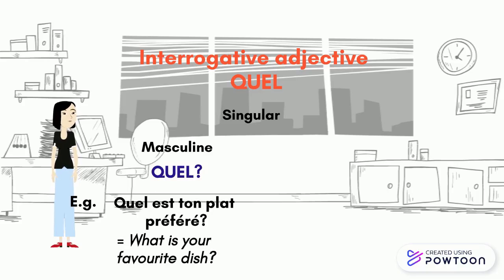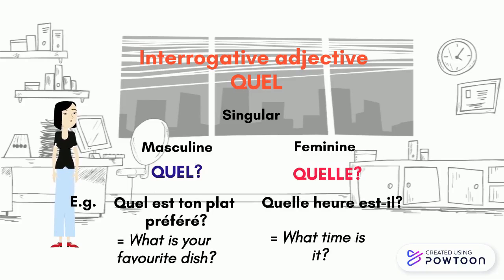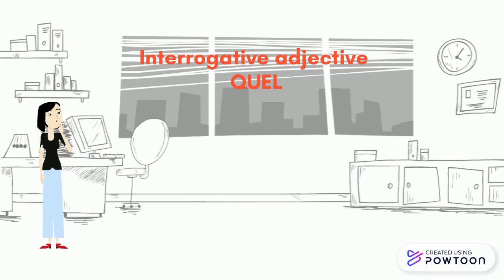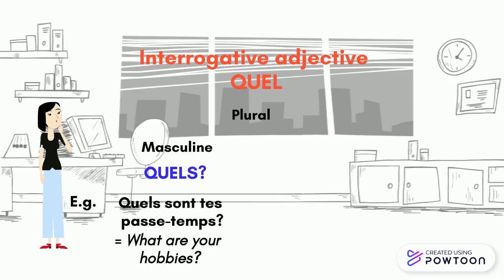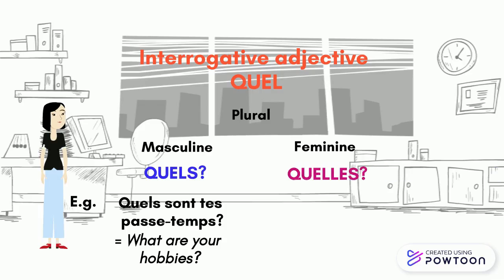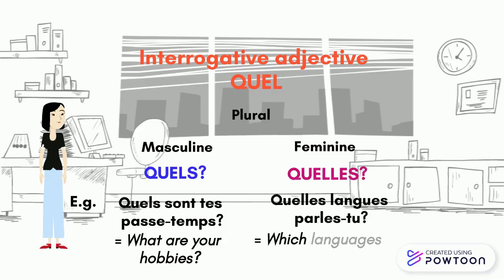The feminine singular form is QUELLE. For example, Quelle heure est-il? — What time is it? The masculine plural form is QUELS. For example, Quels sont tes passe-temps? — What are your hobbies? And the feminine plural form is QUELLES. For example, Quelle langue parles-tu? — Which languages do you speak?